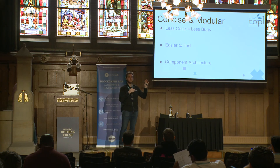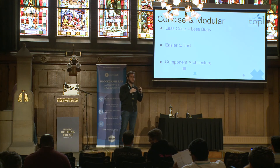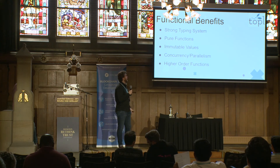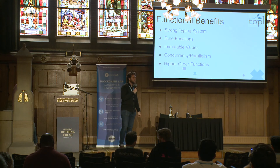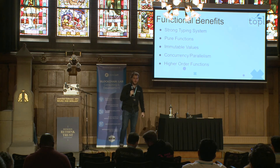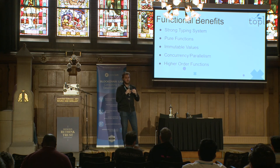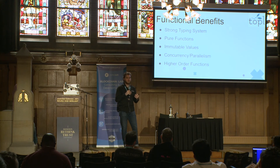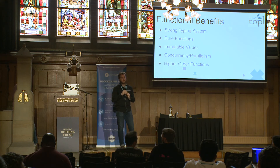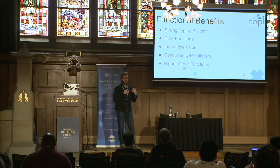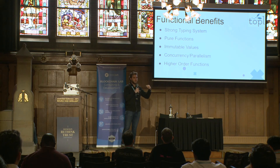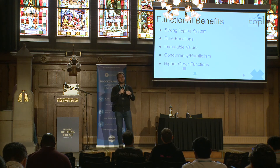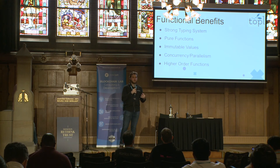Strong typing is number one on the list. Another thing is pure functions, along with immutable values. A key component of all blockchains is their immutability, which goes hand-in-hand with functional programming. All of the collections classes and data structures used in functional programming are by nature immutable. If you create a variable x equals one in any functional programming language, that x is always going to equal one no matter what for the lifecycle of the program.